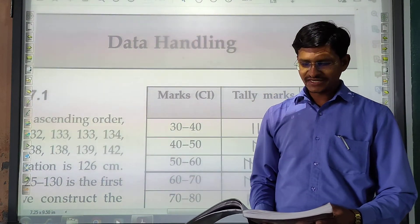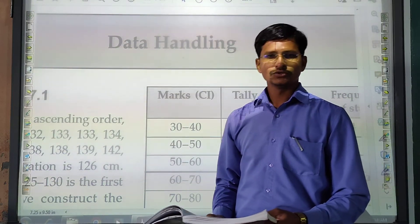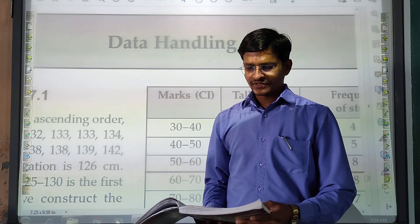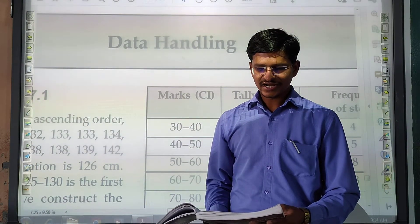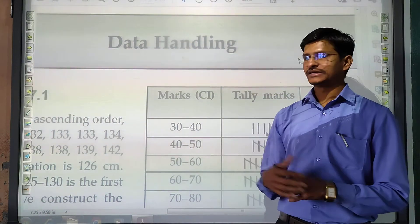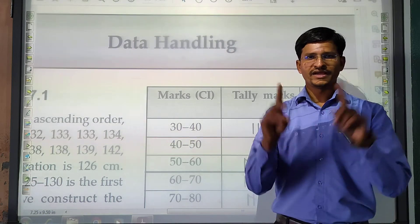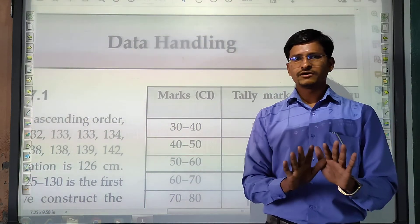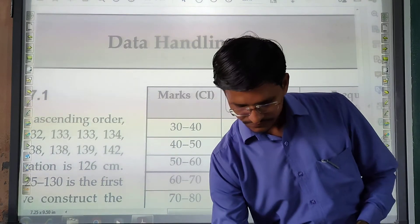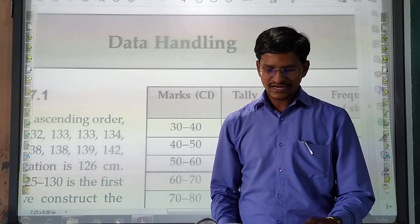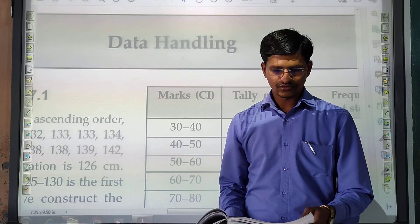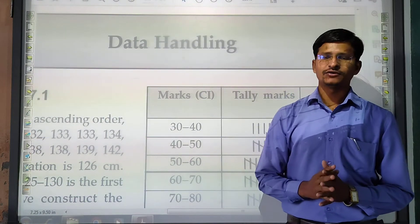Here we have some definitions to understand. Data is defined as the collection of numerical facts regarding a particular type of information — that is called data. Raw data is defined as a collection of observations gathered initially. So these two definitions — data and raw data — are important.